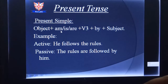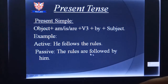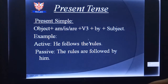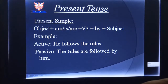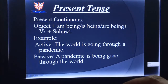Look at this example. Active: 'He follows the rules.' Passive: 'The rules are followed by him.' We can see that in the active sentence, the subject 'he' has become the object 'him' in the passive, 'follows' has become the past participle 'followed,' and 'the rules' has become the subject.